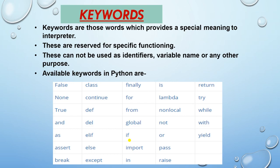Keywords cannot be used as identifiers, variable names, or any other purpose. Keywords are fixed and have a special meaning. These are some available keywords in Python — just go through them.